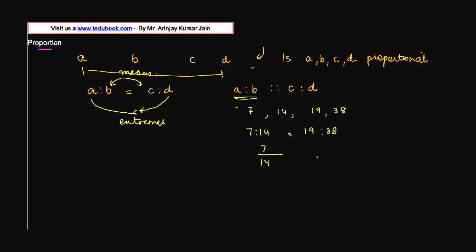Or we write this as 7 upon 14 is equal to 19 upon 38. So we divide the left hand side by 7, both the numerator and the denominator. 7 divided by 7 gives us 1, 14 divided by 7 gives us 2. Similarly, we divide the right hand side, the numerator and the denominator by 19. 19 divided by 19 gives us 1, 38 divided by 19 gives us 2. So on both sides we have reached 1 upon 2 is equal to 1 upon 2.